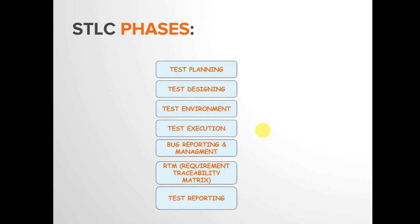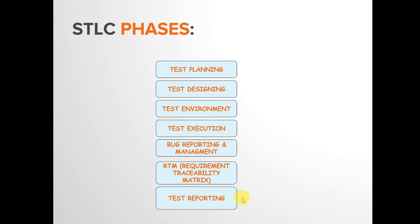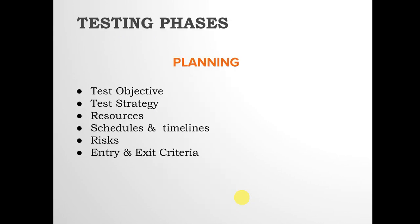The seven phases of STLC are: test planning, test designing, test environment, test execution, bug reporting and management, RTM (Requirement Traceability Matrix), and test reporting. Broadly, these are divided into three parts: planning, execution, and reporting. Test planning, designing, and environment fall under planning; test execution, bug reporting, and RTM fall under execution; and reporting and test closure activities fall under reporting.